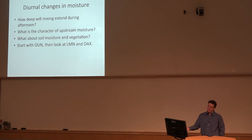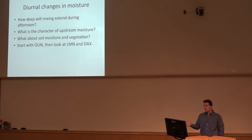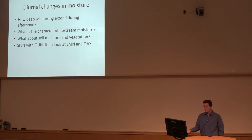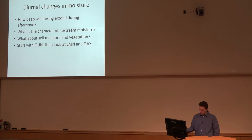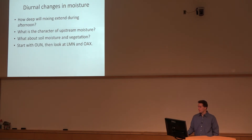Regarding the diurnal changes — this is a rehash of the summary at the beginning — we need to know how deep the mixing is going to be, what's the characteristic of the upstream moisture, is the soil moist, and is there a lot of green vegetation to help with moisture transpiration and evaporation in the boundary layer. I'll illustrate this particular mixing case starting at Norman, then go up to the Lamont sounding site in northern Oklahoma, and then hit Omaha in eastern Nebraska.